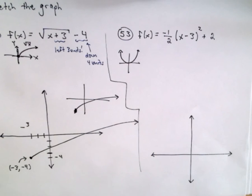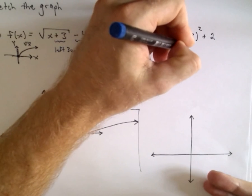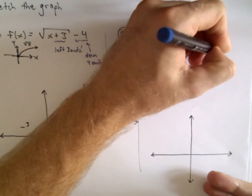So now we've got this minus 3 on the inside, that's going to move it to the right three units. So it's going to move it to the right three units. The plus 2 is going to move it up two units.